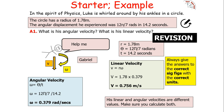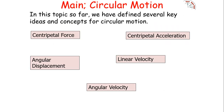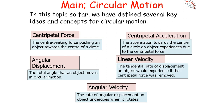In this topic so far, we've defined several key ideas about circular motion. Centripetal force is the resultant force pushing an object towards the centre of a circle. Centripetal acceleration is the acceleration towards the centre caused by that force. Angular displacement is the total angle moved in circular motion. Linear velocity is the tangential rate of displacement if the centripetal force were removed. Angular velocity is the rate of angular displacement an object undergoes when rotating.